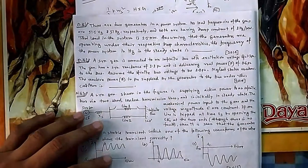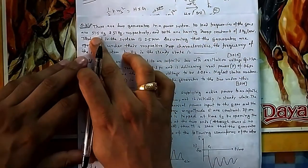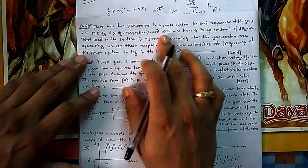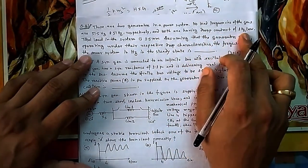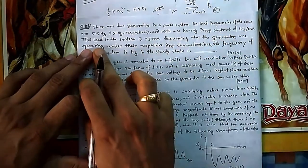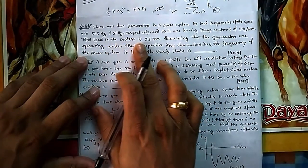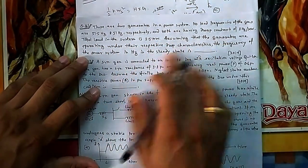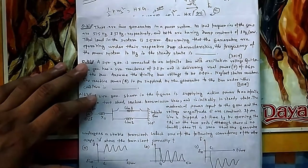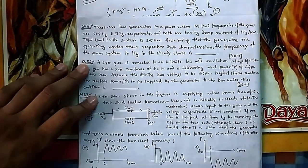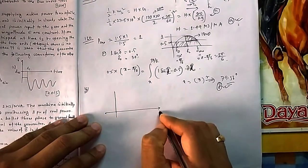In question number 161, there are two generators in a power system. The no-load frequencies of the generators are given respectively, and both have the same droop characteristic: one hertz per megawatt — that is the slope of the straight line. The system load is 2.5 megawatt. Assume generators are operating under their respective droop characteristics. Find the frequency of the power system in hertz in steady state.